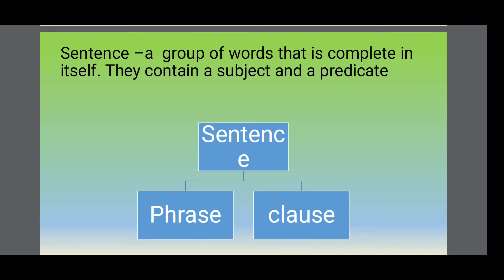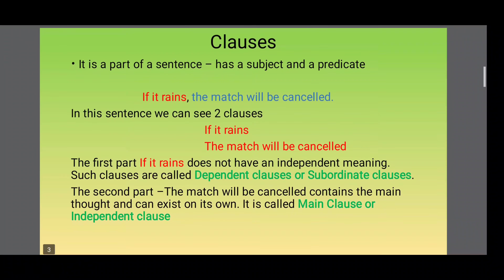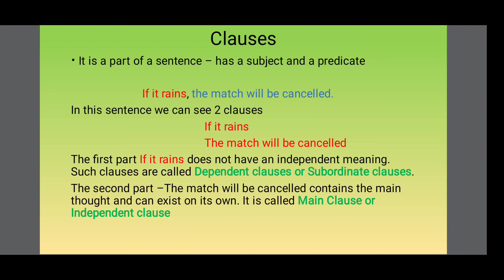A clause is a part of a sentence that has a subject and a predicate. Look at the sentence: 'If it rains, the match will be cancelled.' We can see two clauses here. The first part, 'if it rains,' does not have an independent meaning — it cannot stand on its own. Such a clause that cannot stand on its own is called a dependent clause. The second part, 'the match will be cancelled,' contains the main thought of the sentence and can exist on its own.